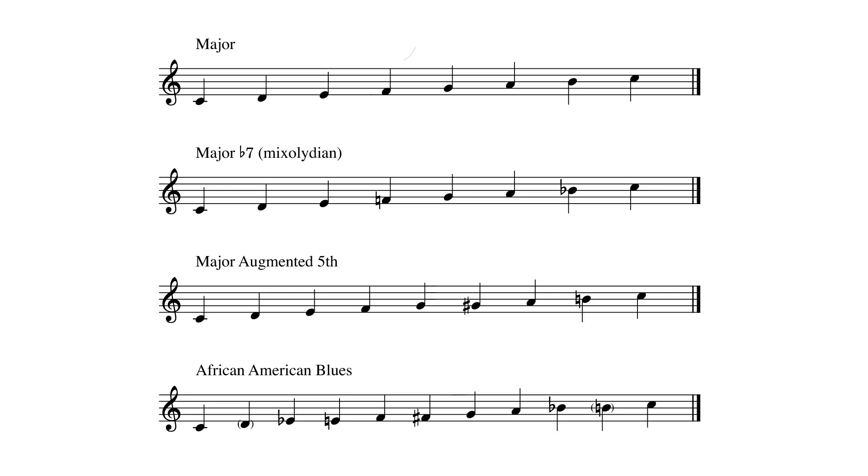While these scales are primarily horizontal, they can be used vertically as well. The major scale is what we saw in the Coltrane examples. The major flat 7 scale, mixolydian, is found in folk songs and many pop songs. The major augmented 5th scale includes the pitches of the harmonic minor scale, if you start the scale on the 6th scale degree. The African American blues scale contains the notes of a standard blues scale along with a few other notes.